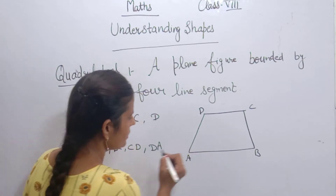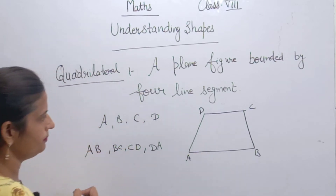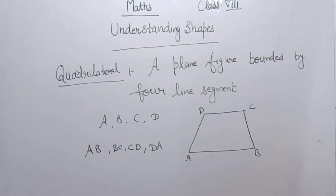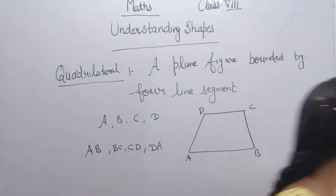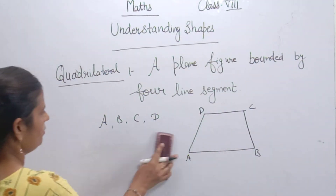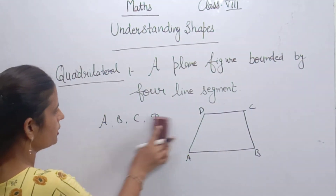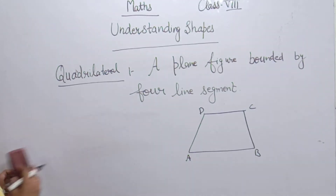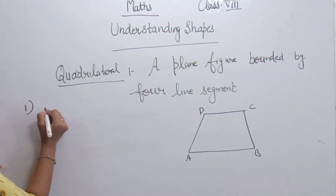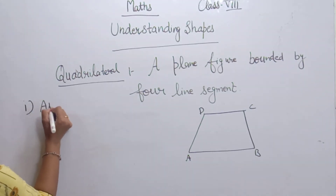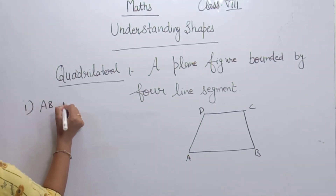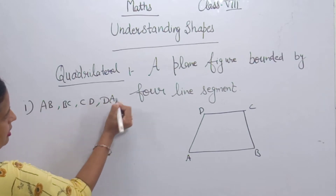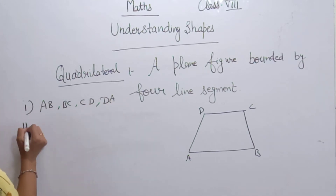Now let's talk about the parts of the Quadrilateral. Let's note together. I will tell you about the four sides: AB, BC, CD and DA. These are four sides. And there are also four angles.